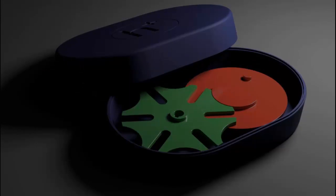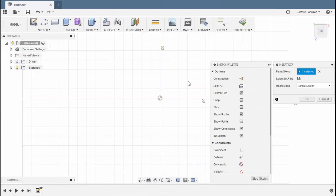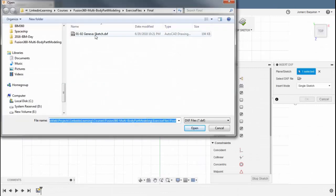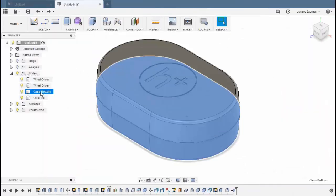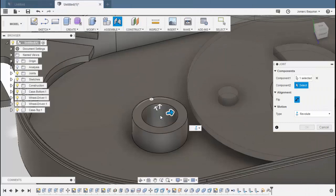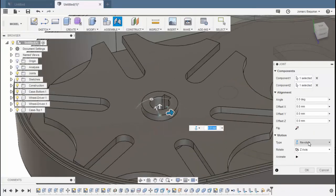Some of the key topics in this course are: importing and reusing sketches to create components, splitting bodies into multiple parts, turning bodies into components, and finally joining the components together to create a dynamic assembly.